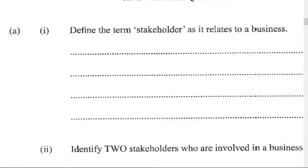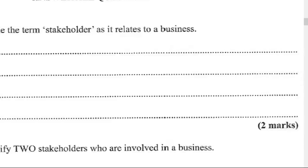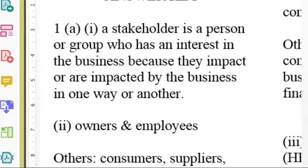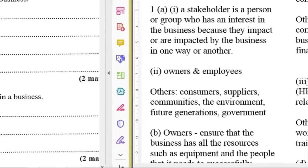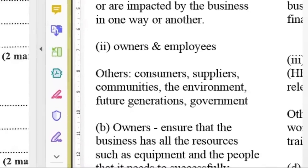Let's look at the first question, number 1A1. Define the term stakeholders as it relates to a business, worth two marks. A stakeholder is a person or group who has an interest in the business because they impact or are impacted by the business in one way or another. For A2, identify two stakeholders involved in a business, one mark each. We have owners and employees. Other stakeholders you could list are consumers, suppliers, communities, the environment, future generations, and the government.